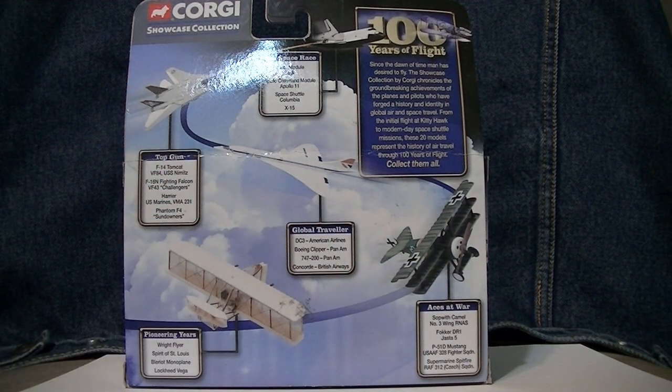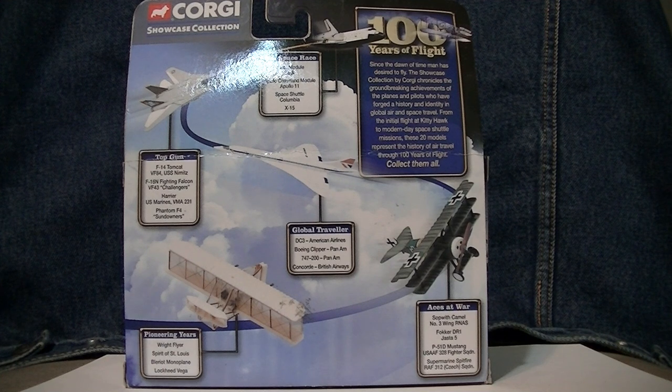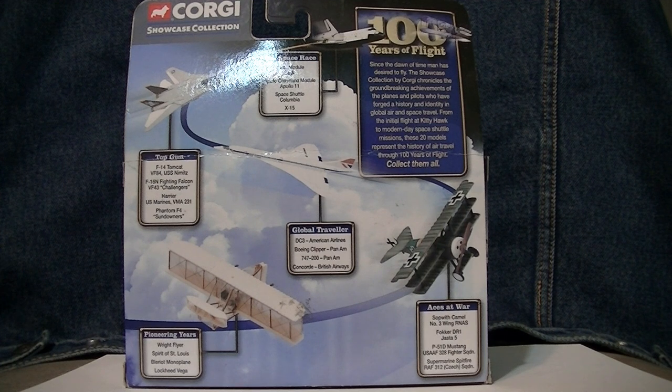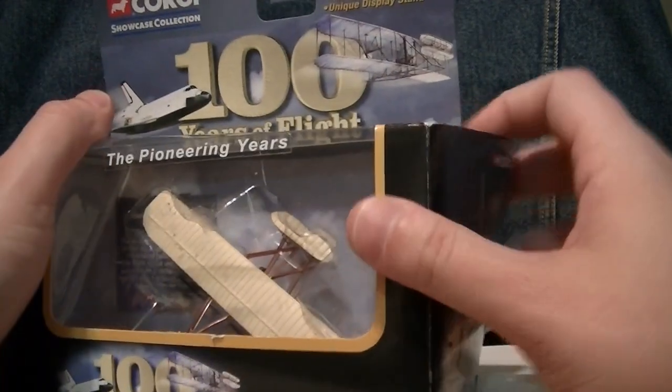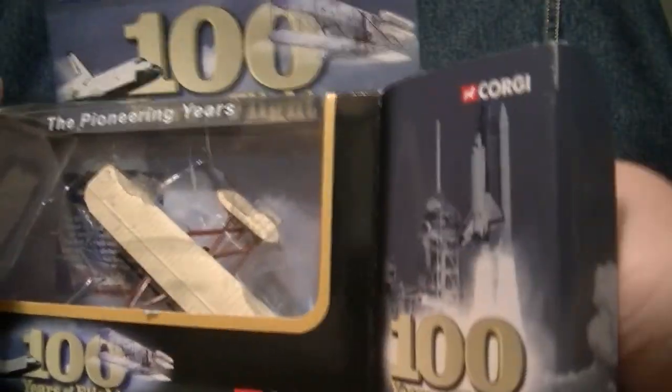Let's see, there is a blurb up there. Since the dawn of time, man has desired to fly. The Showcase Collection by Corgi chronicles the groundbreaking achievements of the planes and pilots who have forged a history and identity in global air and space travel. From the initial flight at Kitty Hawk to modern-day space shuttle missions, these 20 models represent the history of air travel through 100 years of flight. Collect them all. I don't really intend to be collecting the entire thing, but, hey, Wright Flyer, the first heavier-than-air steerable flying machine ever made.